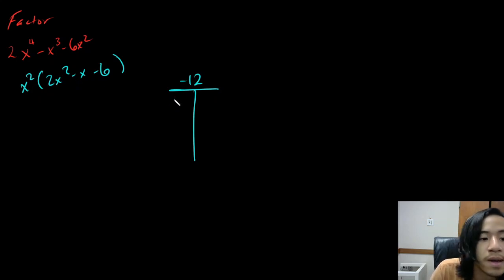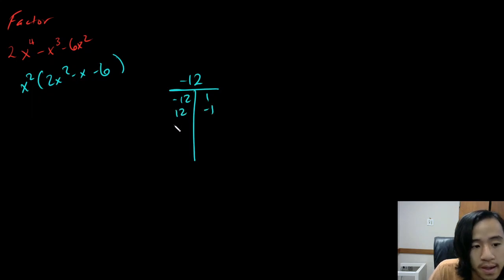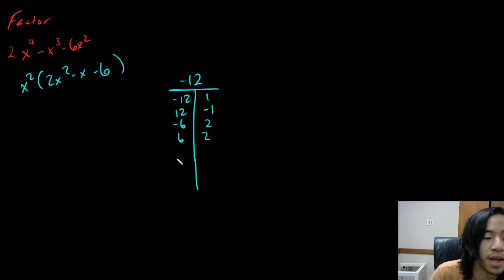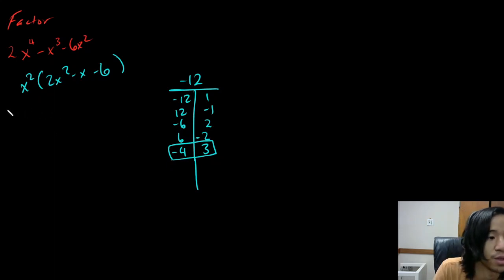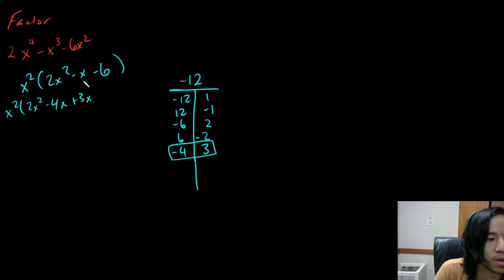Let's go down the list. Negative 12 and one — nope. 12 and negative one — nope. Negative six and two — nope. Six and two — nope. Negative four and three — oh, that does work. So here are the two numbers that work. We're going to rewrite X as those two numbers. So we have X squared and then two X squared minus four X plus three X — notice how I rewrite negative X as the two numbers I've chosen — and then minus six.